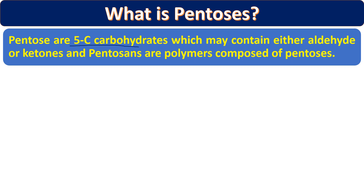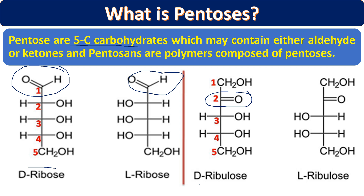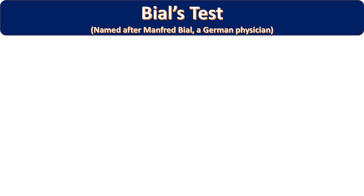Pentose is a five-carbon carbohydrate which may contain either aldehyde or ketones. Pentosan is a polymeric compound of pentoses — when many pentoses combine they give us a polysaccharide polymer called pentosan. If you hydrolyze pentosans you will get pentose as a product. Examples include ribose sugar, which has an aldehyde group — D-ribose and L-ribose are both five-carbon monosaccharides.